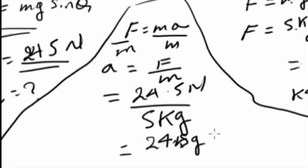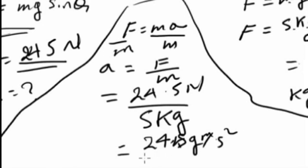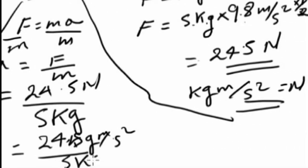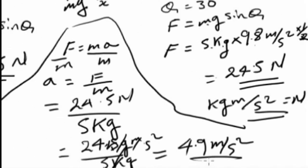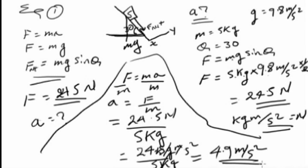24.5 kilogram meters per second squared divided by 5 kilograms — kilogram cancels kilogram — giving us almost 4.9 meters per second squared. So the acceleration along the surface is approximately 4.9 meters per second squared.